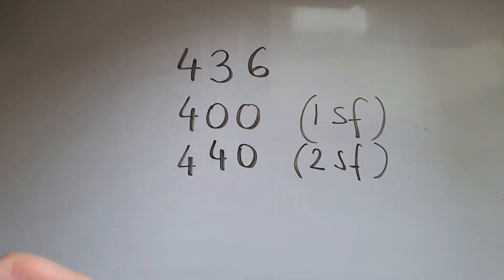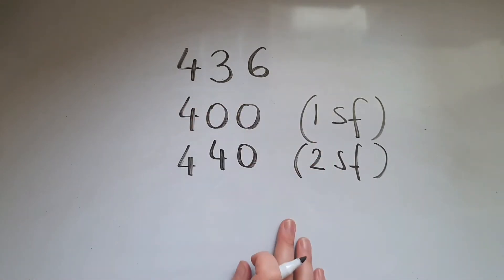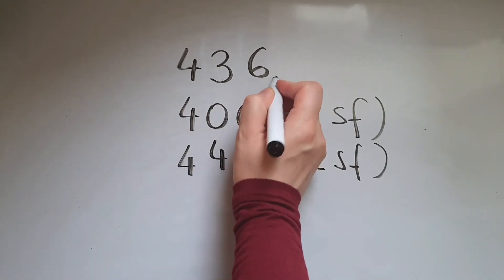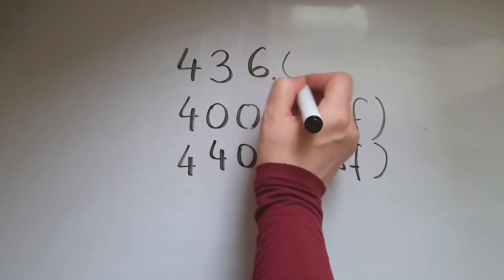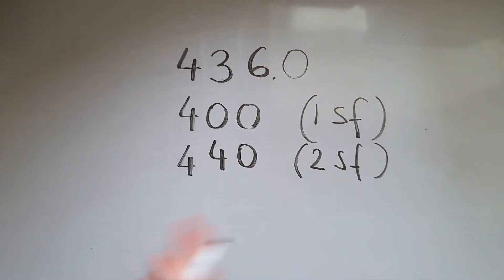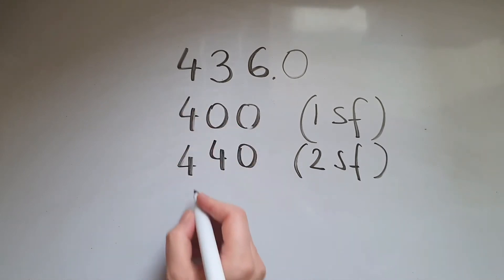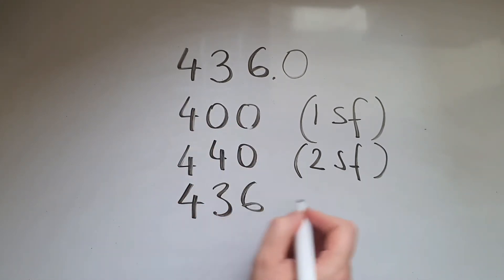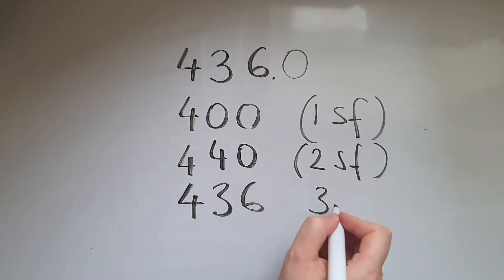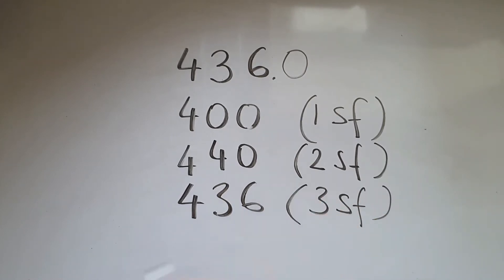Rounding the same number to three significant figures means we're going to keep it the same, because this number has no decimal point, or the decimal point is at the end. So that would remain unchanged — 436 to three significant figures.